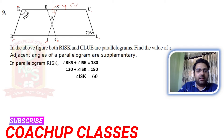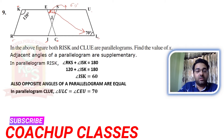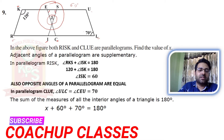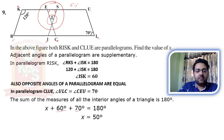Similarly, we find angle E. Angle UEC equals 70 degrees. In parallelogram CLUE, opposite angles are equal, so angle E equals 70 degrees. Now in the triangle, the sum of all interior angles is 180 degrees. So X plus 60 plus 70 equals 180. Adding 60 and 70 gives 130, so X equals 180 minus 130, which is 50 degrees.